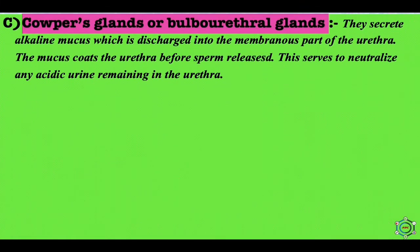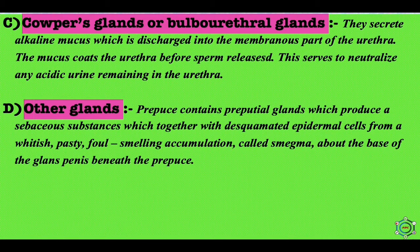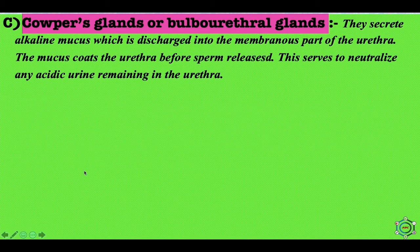Next are Cowper's glands or bulbo-urethral glands. They secrete alkaline mucus discharged into the membranous part of the urethra, coating the urethra before sperm release. This serves to neutralize any acidic urine remaining in the urethra. The secretion of Cowper's glands carries some spermatozoa released before ejaculation, which is one reason for the high failure rate of the withdrawal method of birth control.